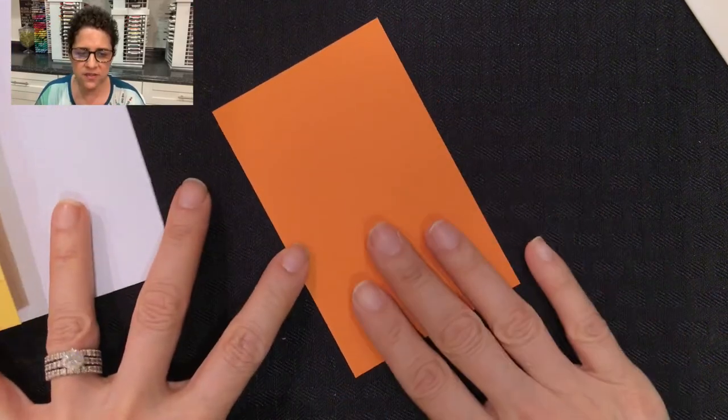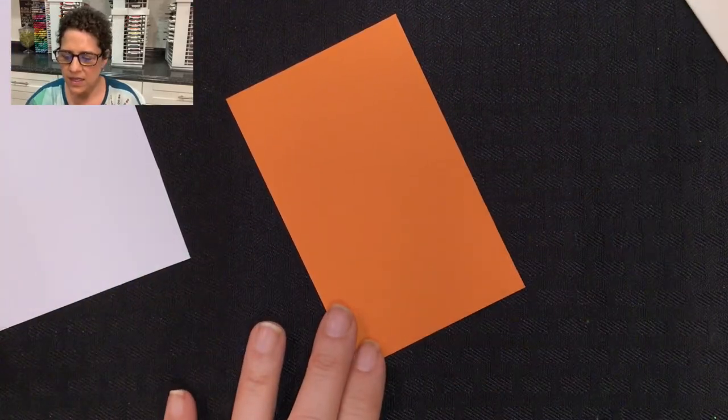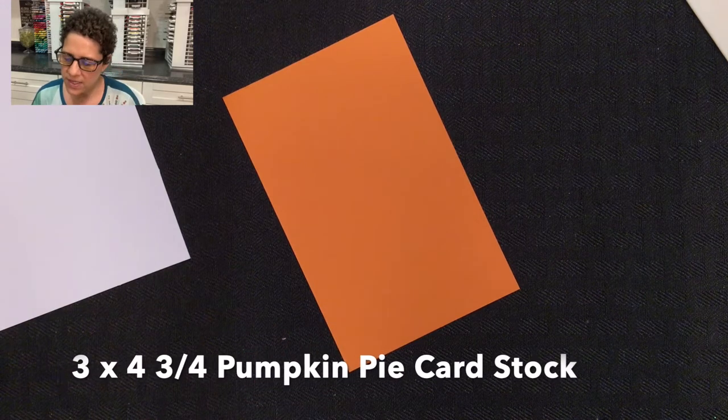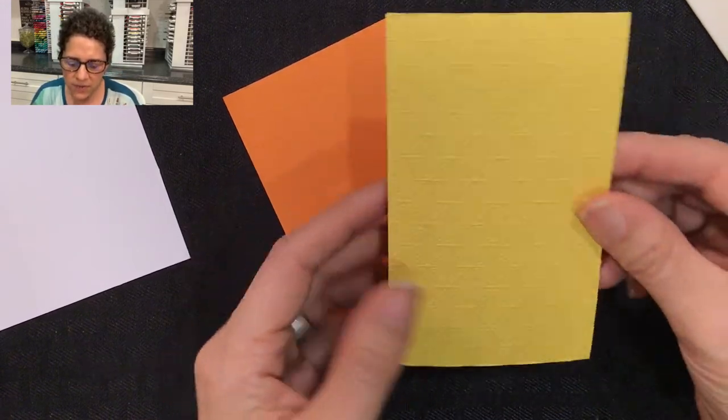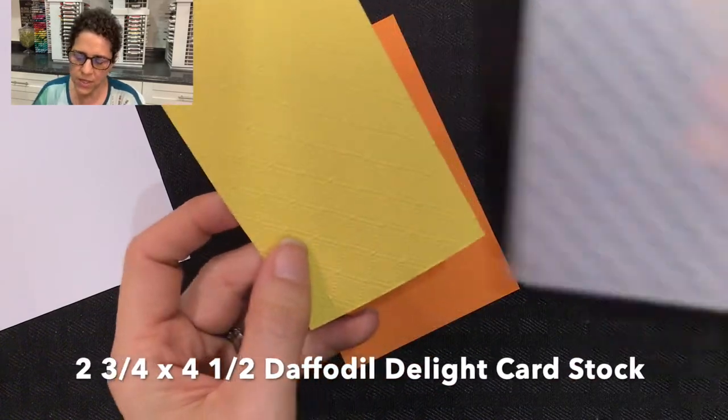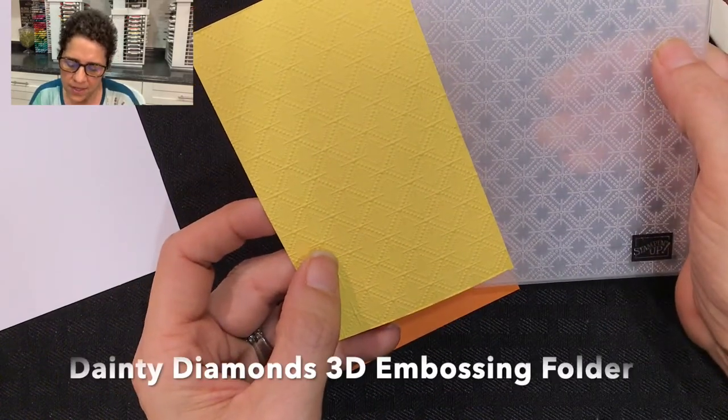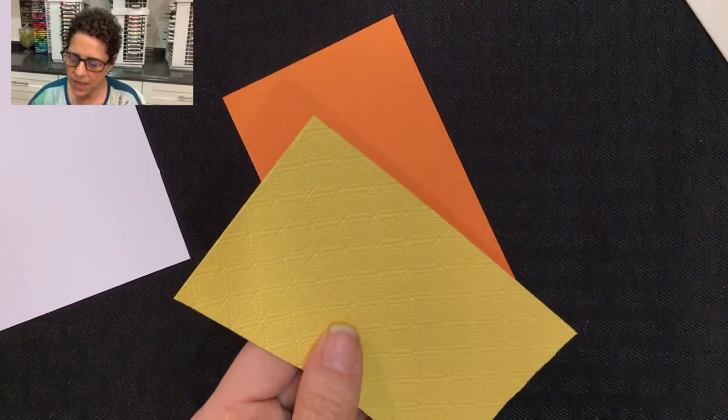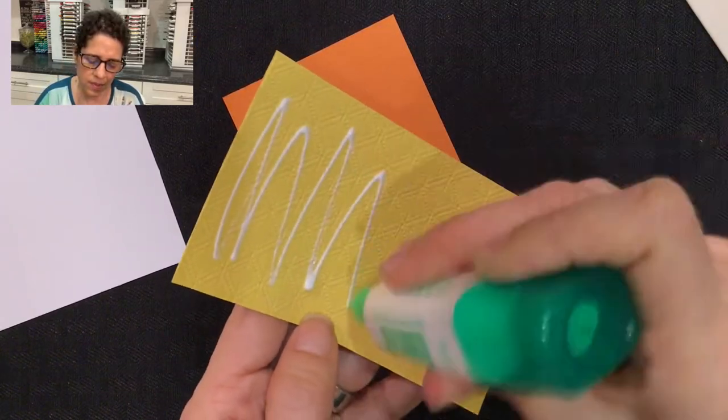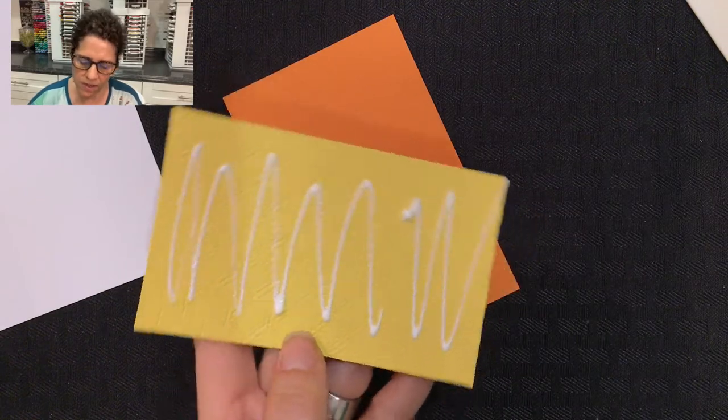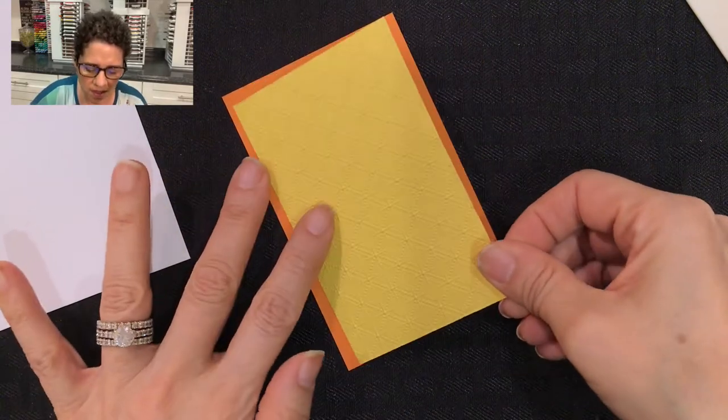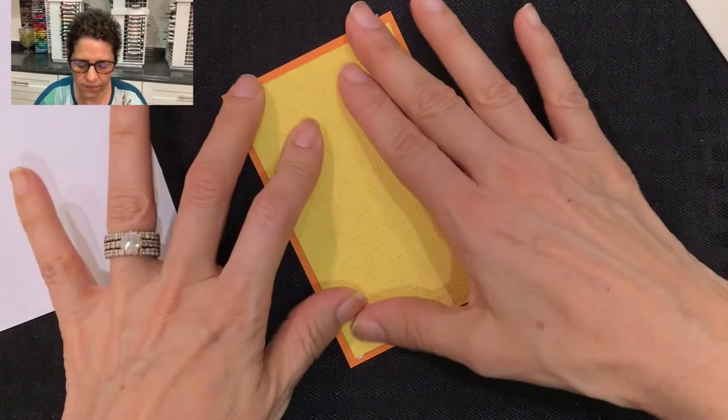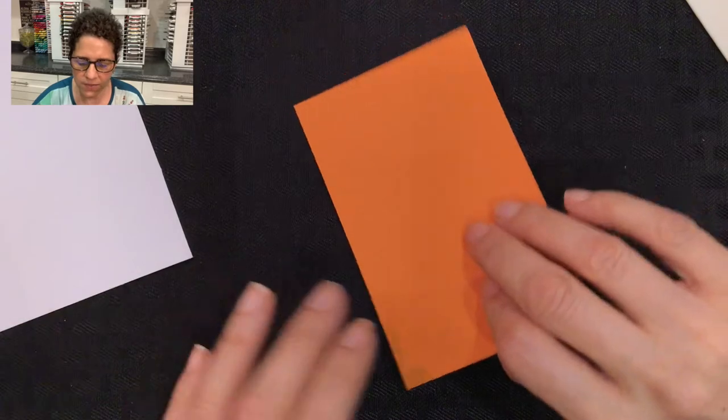Now that that's done, the next thing we're going to do is take a piece of pumpkin pie cardstock that's been cut at 3 by 4 and 3/4 inches. Then I'm going to use a piece of daffodil delight cardstock that I've embossed with our brand new Dainty Diamonds embossing folder. This is a 3D embossing folder. I'm going to put my adhesive on the back and press this onto the front of the pumpkin pie.